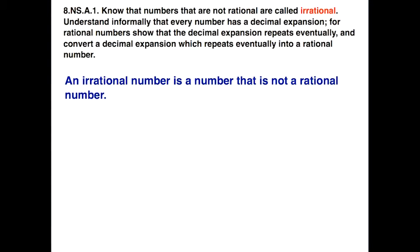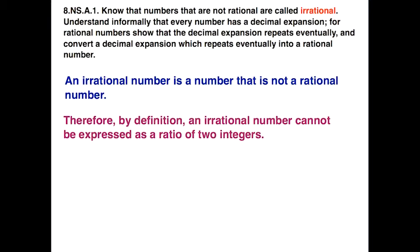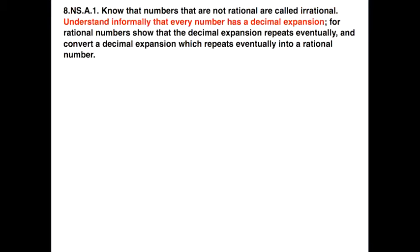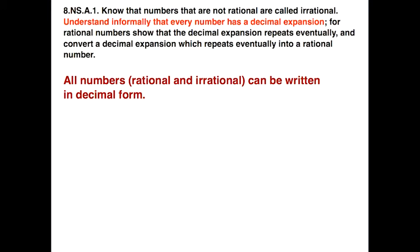An irrational number, by definition, is a number that's not a rational number. What this means is that an irrational number cannot be expressed as a ratio of two integers. Every number, be it rational or irrational, can be written in decimal form.